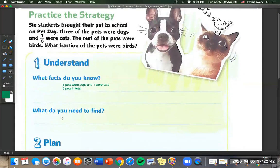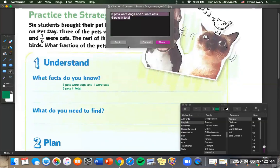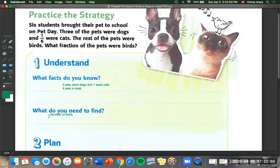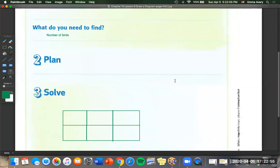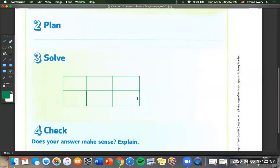Also, we know that there were six pets in total. And what do we need to find? We need to find the number of birds. Just like that right there. And our plan, we're going to draw a diagram. And I've already drawn in my diagram down here.